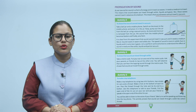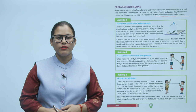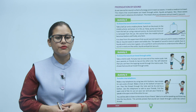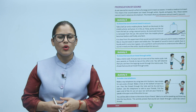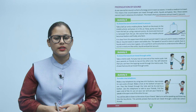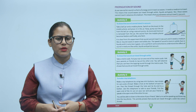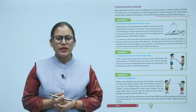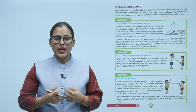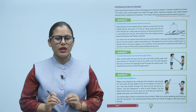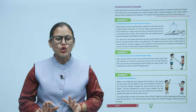Activity 4: To show that sound cannot travel in vacuum. Take a bell jar and a mobile phone. Switch on the music in the mobile phone and place it in the jar. Now pump out the air from the bell jar using a vacuum pump. As more and more air is removed from the jar, the sound from the mobile phone becomes feebler and finally very faint. This experiment clearly shows that sound cannot travel in vacuum and it needs a medium like air.